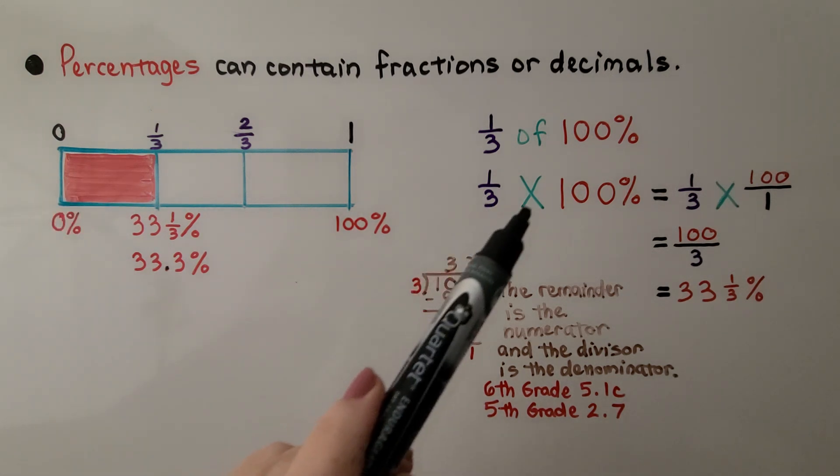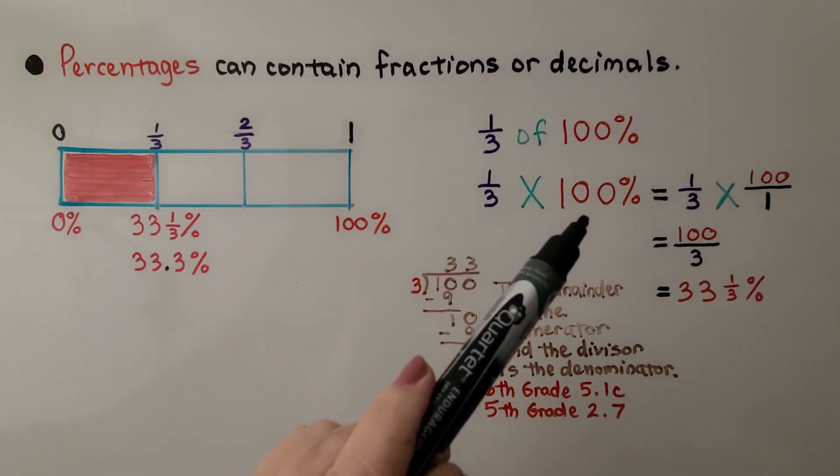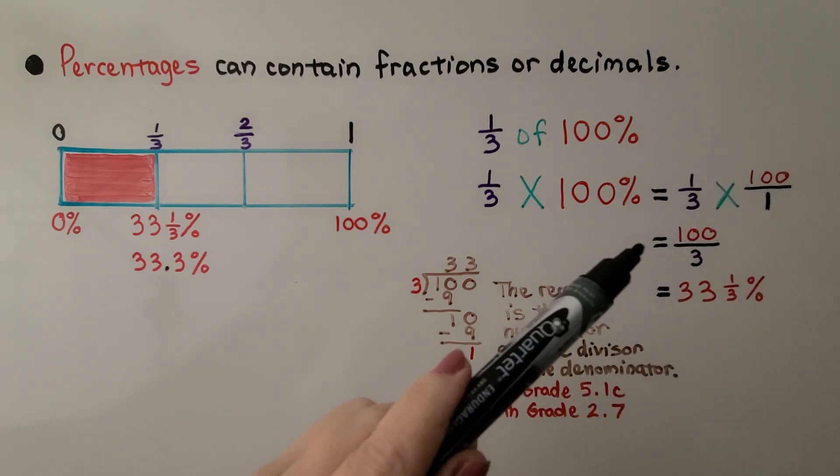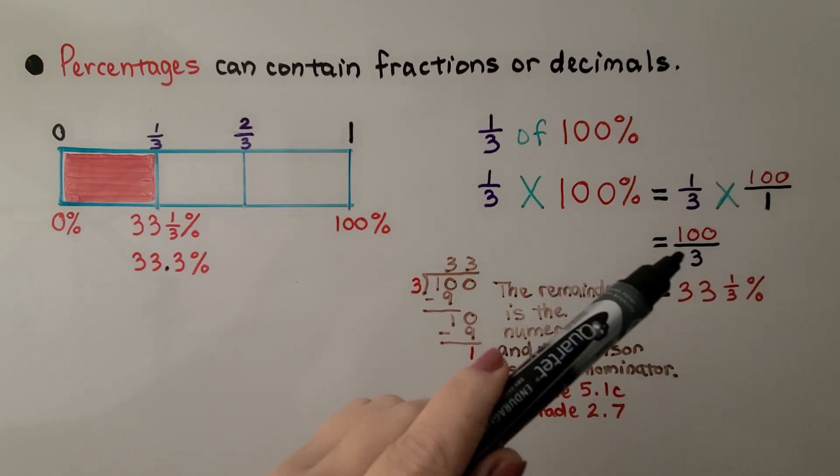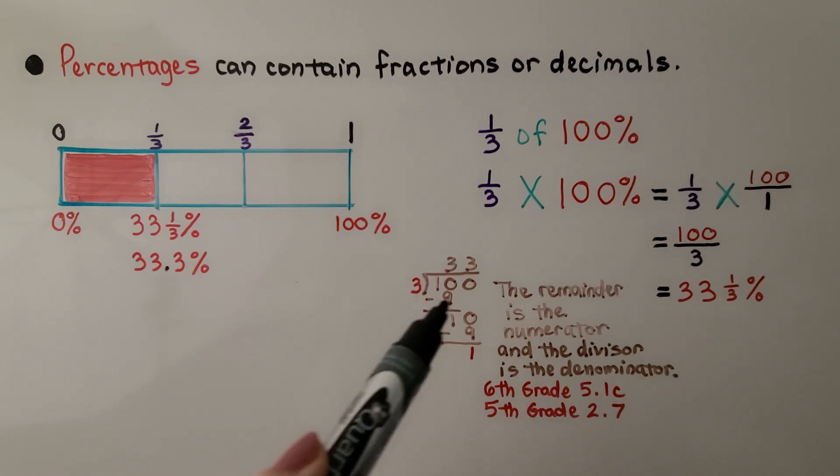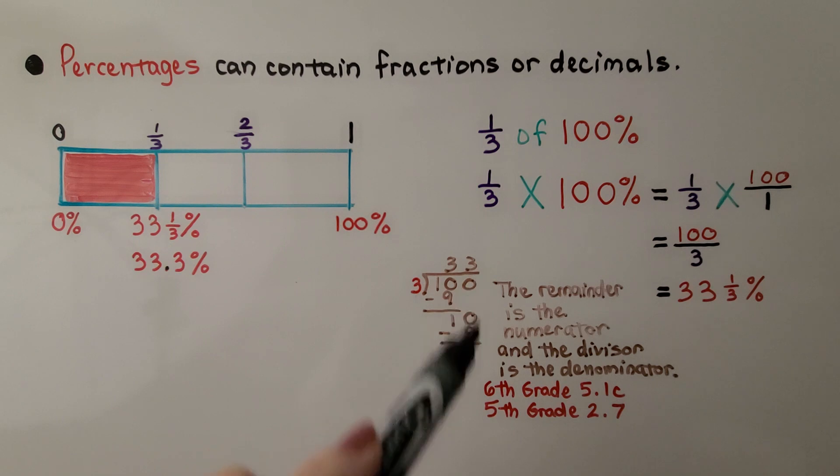We can do one-third times 100%. That's going to equal one-third times 100 over 1, which gives us 100 for a numerator and 3 for a denominator. And if we do 100 divided by 3, we're going to keep getting a 3 in the quotient, and we're going to be able to keep bringing zeros down. We can stop.